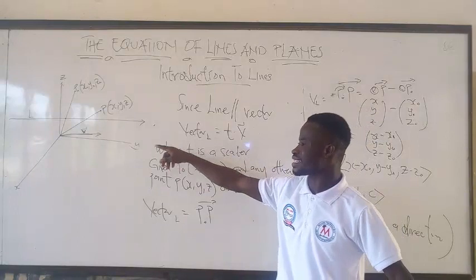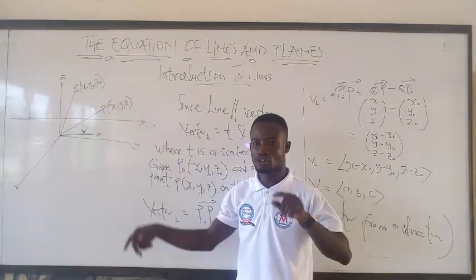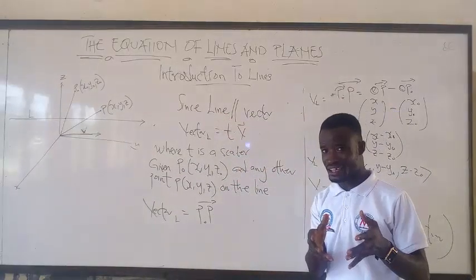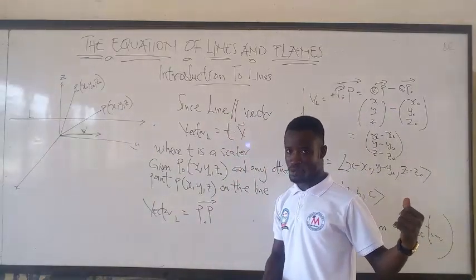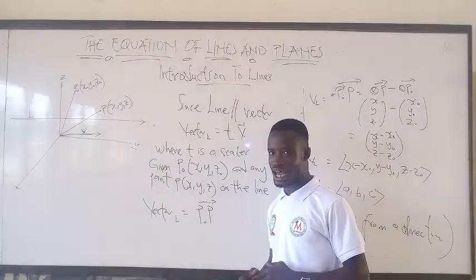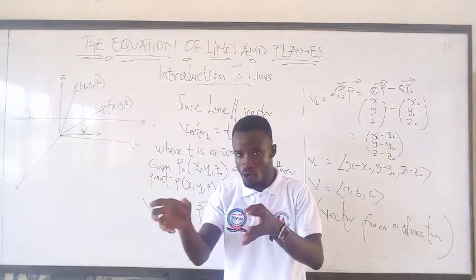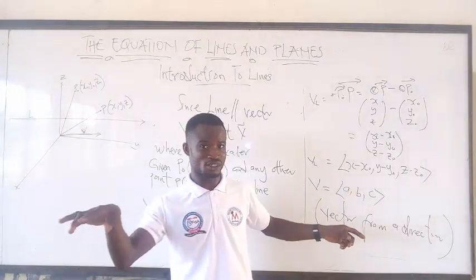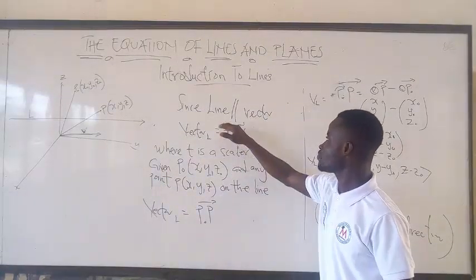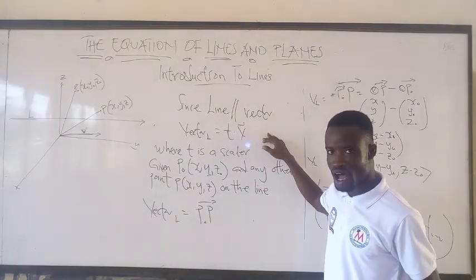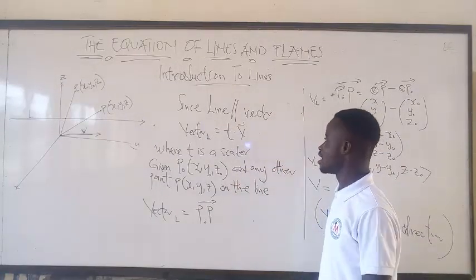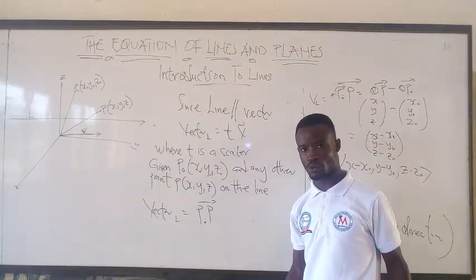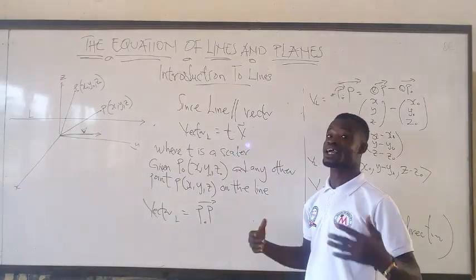You can also see that the line is parallel to the vector. Since the line is parallel to the vector, from your previous knowledge, you know that when two vectors are parallel, one is the scalar multiple of the other. In the same way, if the line and the vector are parallel, then one is the scalar multiple of the other. Here we are using T to represent the scalar multiple — it can be K, it can be anything.